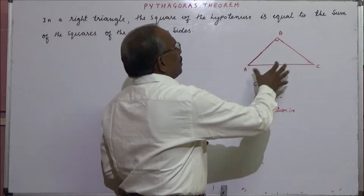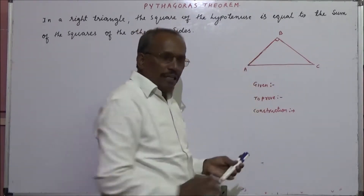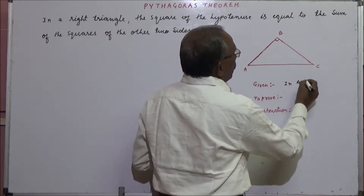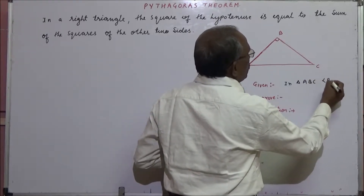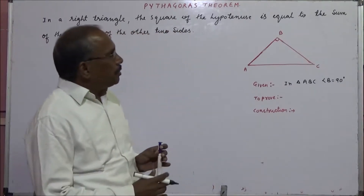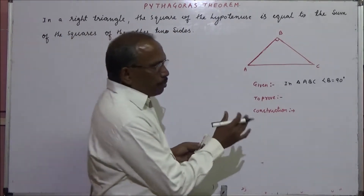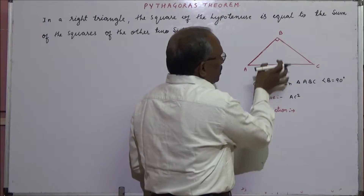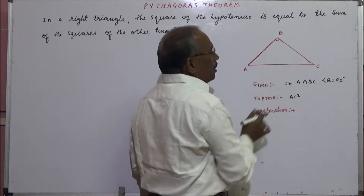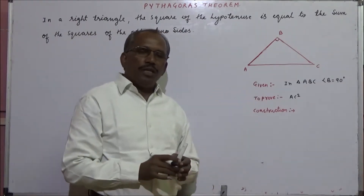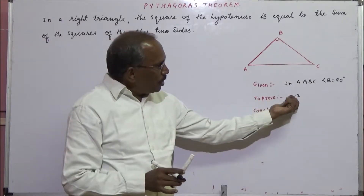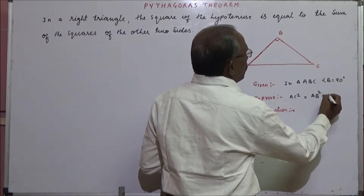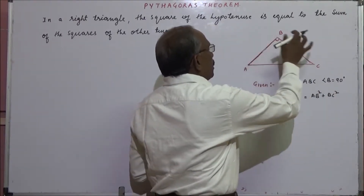So what we have to prove here — suppose this is any given right triangle. What is the given condition here? In triangle ABC, angle B is equal to 90 degrees. And what is to be proved? We have to prove the square of the hypotenuse. Hypotenuse means the side opposite to the 90 degree in a right triangle. So square of the hypotenuse is equal to sum of the squares of the other two sides, that is AB square plus BC square.